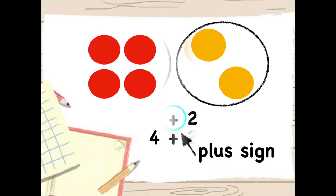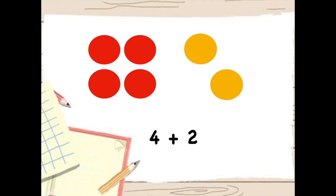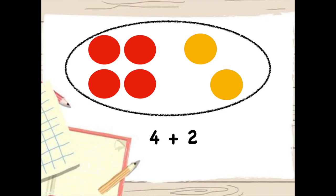Now that I know what my groups are, it's time to figure out how many in all. To do that, I need to count all of the counters. Count with me. One, two, three, four, five, six. There are six counters in all. Four plus two equals six.